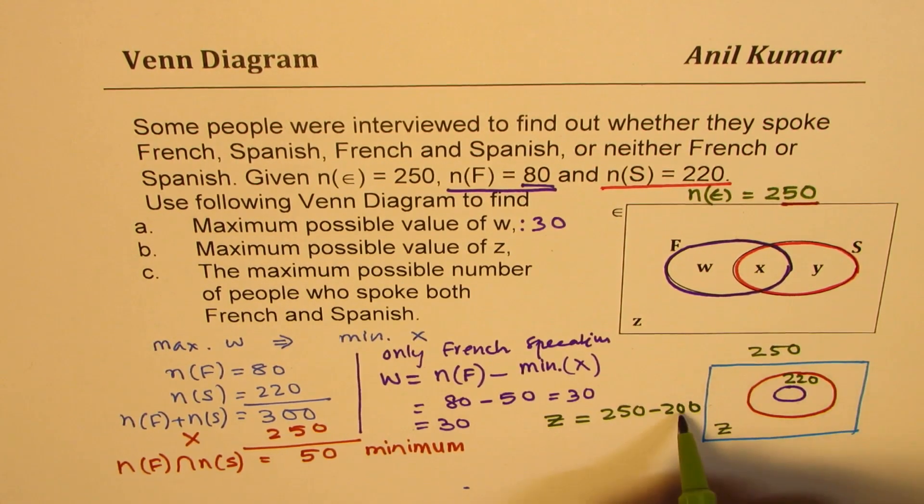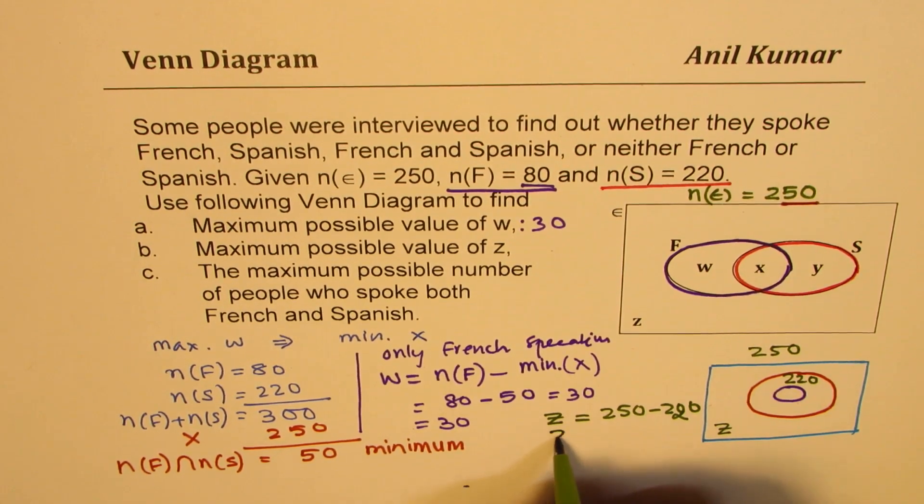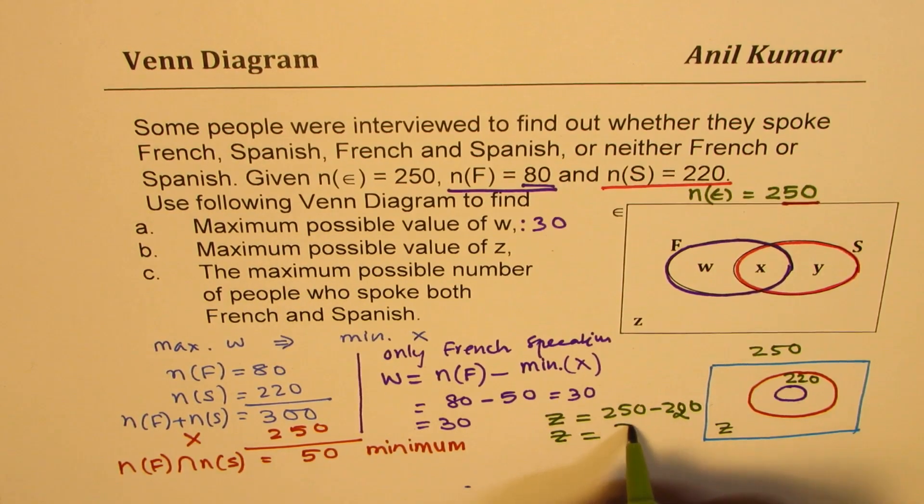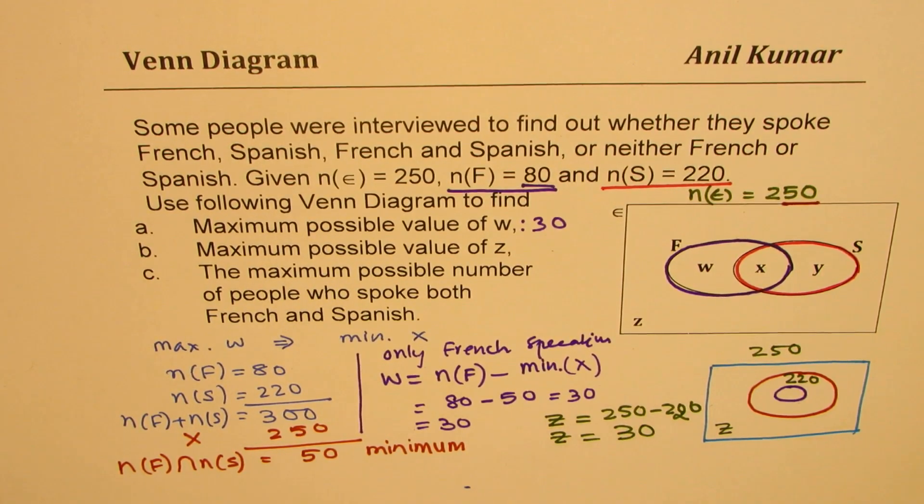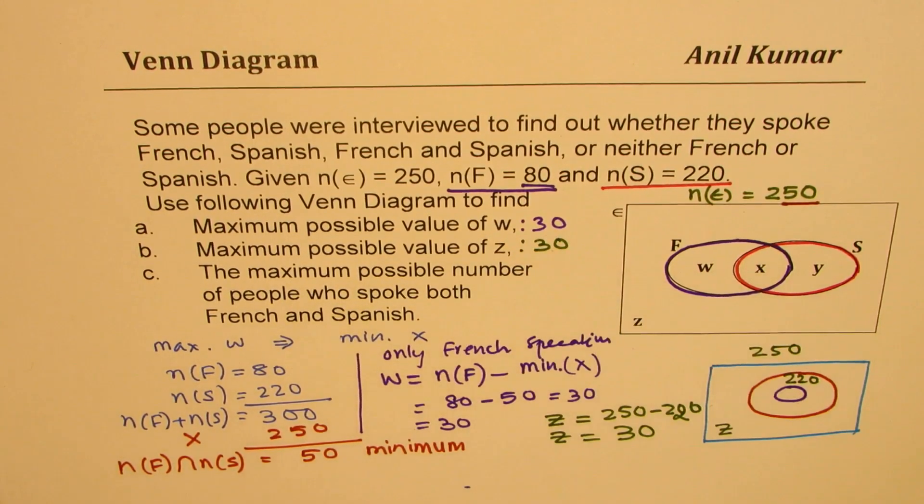So that could be this scenario. All are just speaking both the languages, French or Spanish. So in that case, we get the value of Z to be 30. That could be the maximum possible scenario. So we get the value of Z as 30.